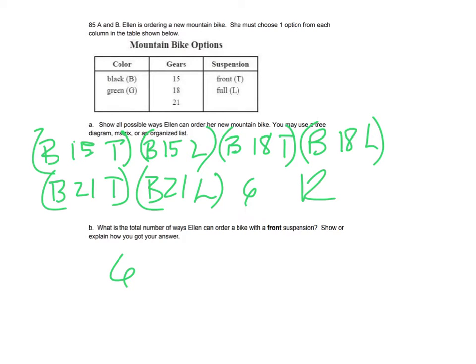Okay, and then what is the total number of ways that Ellen can order a bike with just front suspension? So really, it's two times three times one, so it's six, six possibilities. Two times three times one, because there's only one combination there for suspensions. Where it is two times three times two for his number of possibilities of 12 with both of those suspension options.